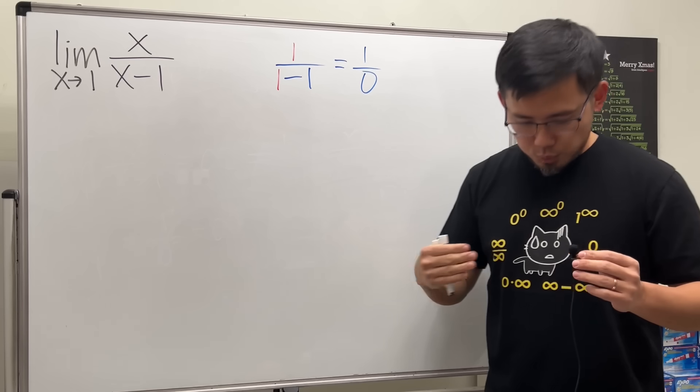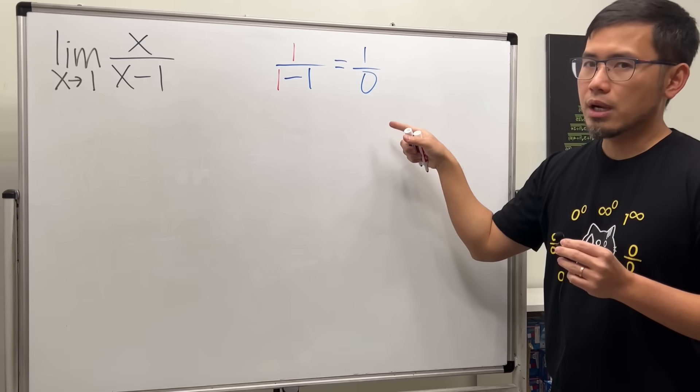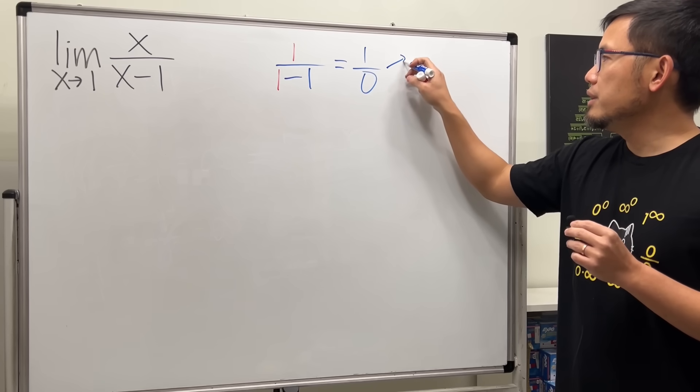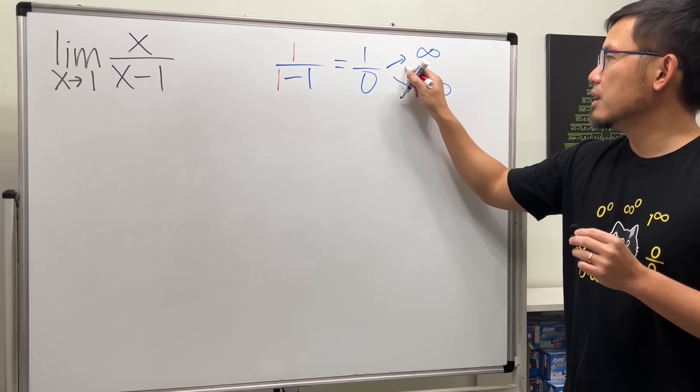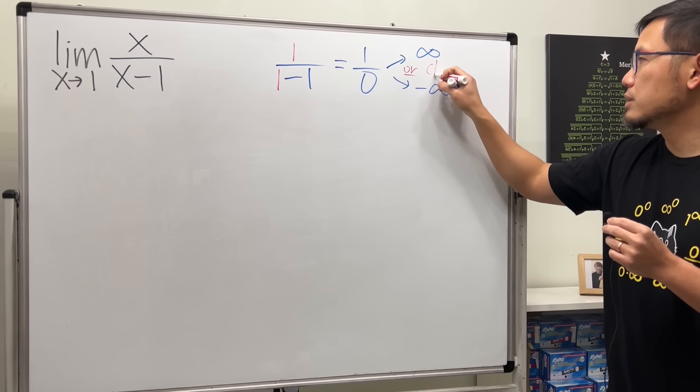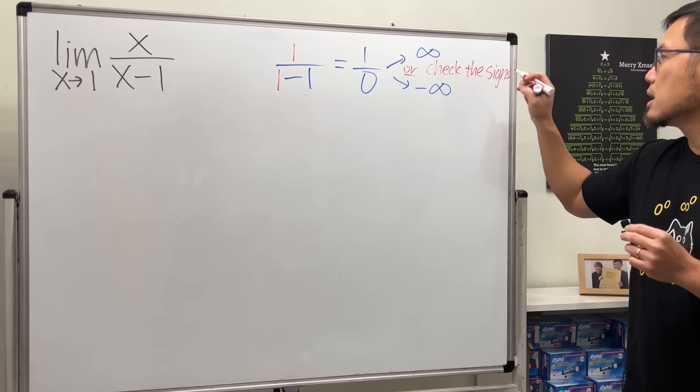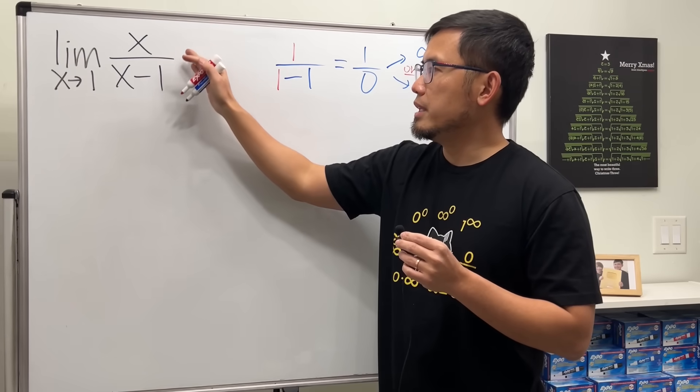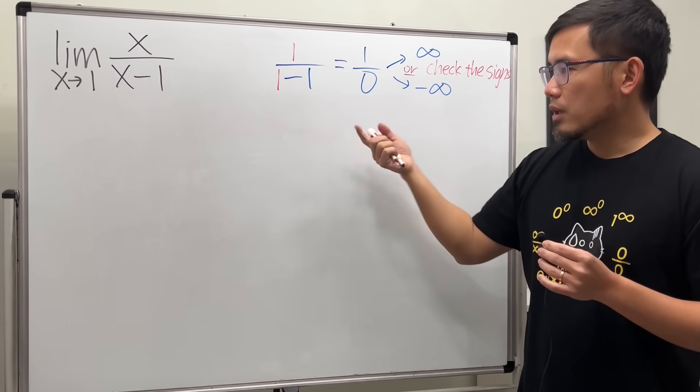1 over 0 is not one of the indeterminate forms here. In fact, you can draw conclusions, but you have to do it carefully. This right here, you either get positive infinity or negative infinity. You just have to work out the sign. So let me just put this down. Check the signs. By the way, you never write down this being equal to plus or minus infinity.